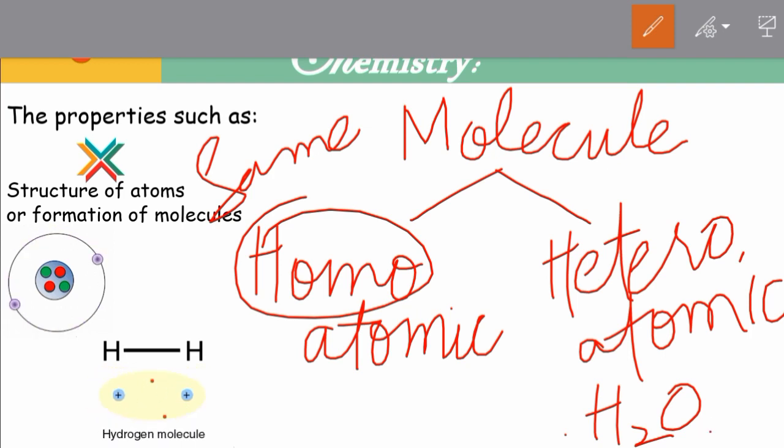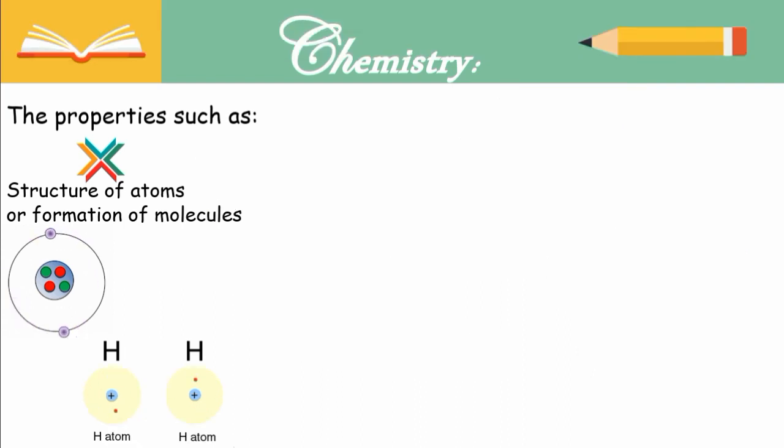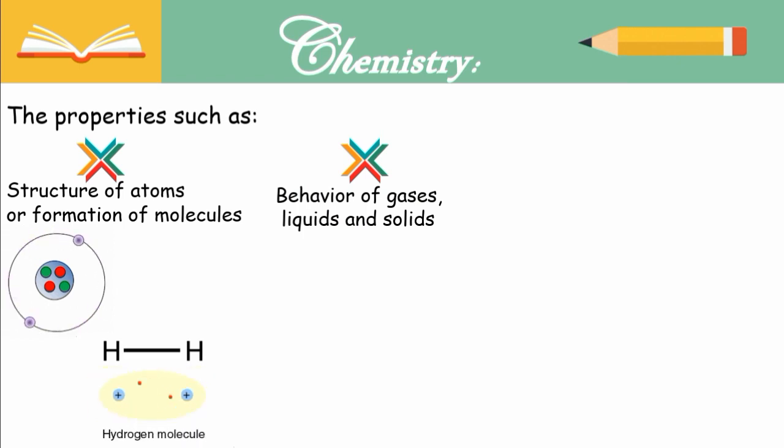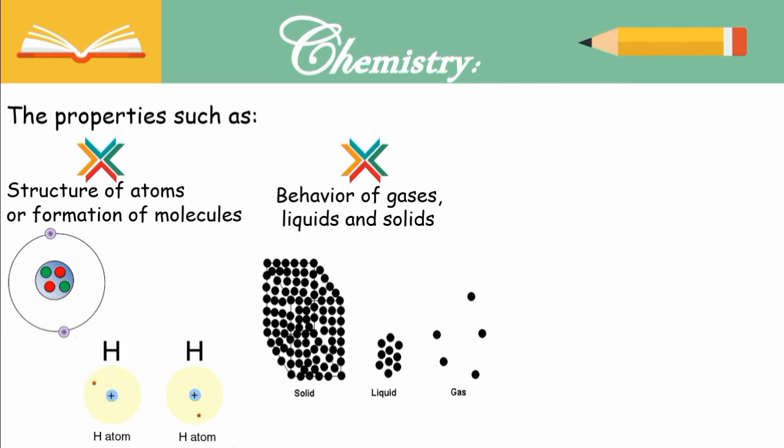The next property discussed in physical chemistry is about the behavior of gases, liquids, and solids. Students, in your previous classes you discussed the states of matter. There are basically three states of matter: solid, liquid, and gases.